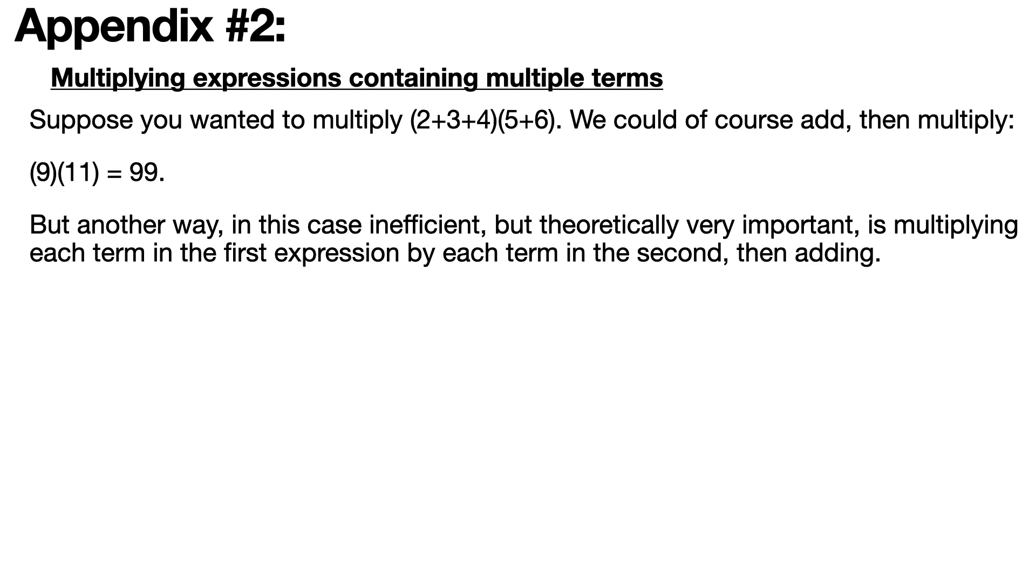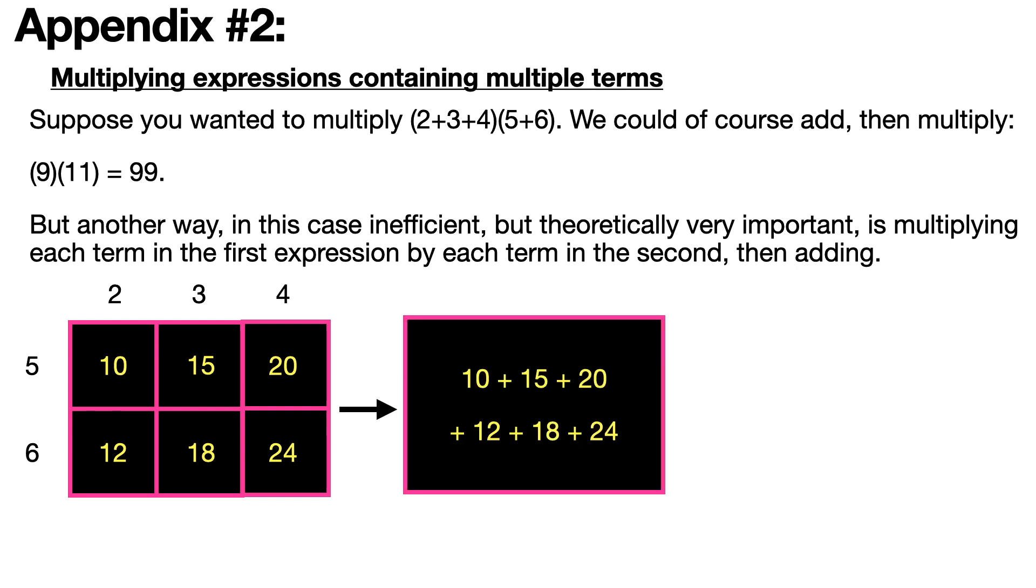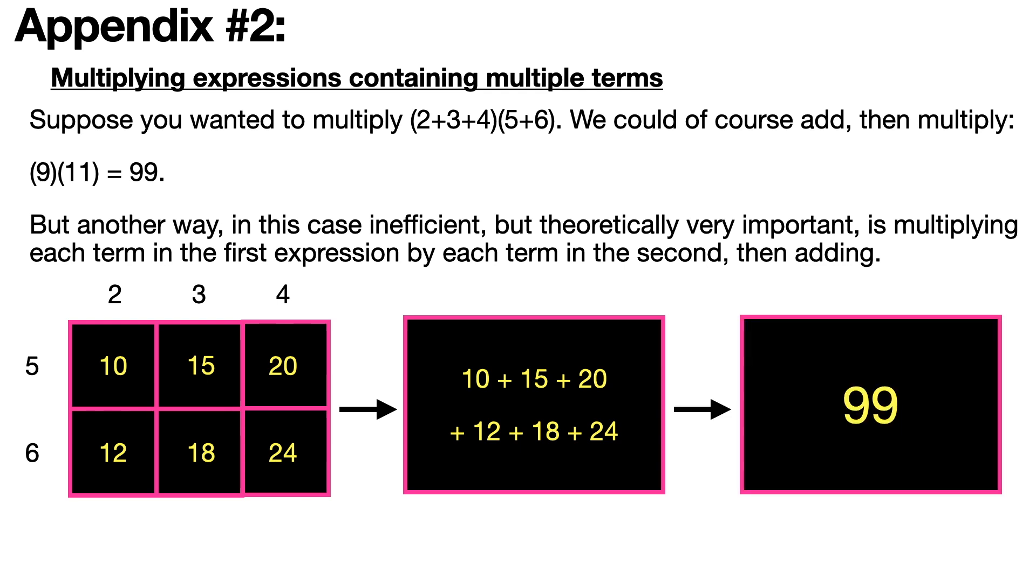But the other way is important. First you multiply every term in the first expression by every term in the second, and then you add all of them together. I'm very partial to teaching it with a box. You write all the terms of the first part on the top and all the terms of the second expression on the side, and you multiply all of these as if it was a little multiplication table. Then you add all the results to get 99.